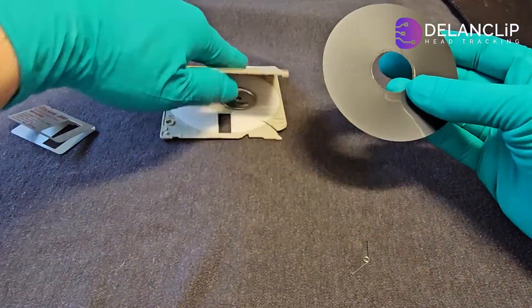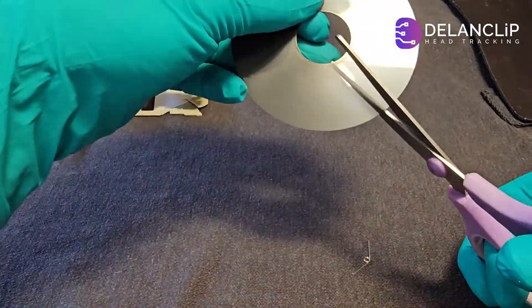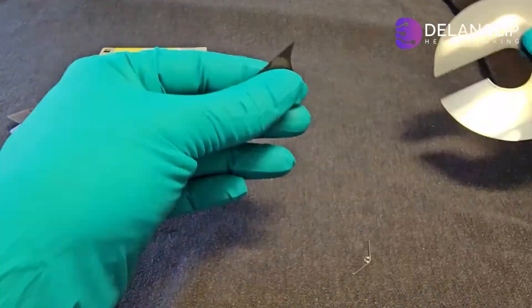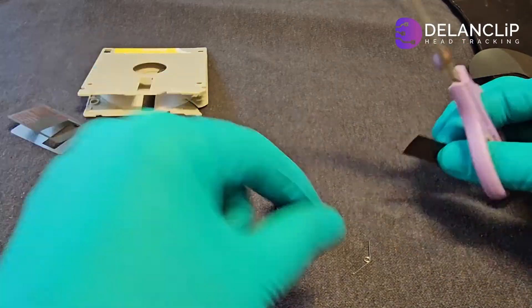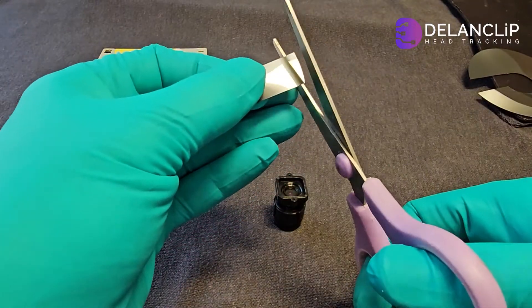First, carefully open up the floppy disk to access the film inside. Cut out a small piece that will fit perfectly into the lens.